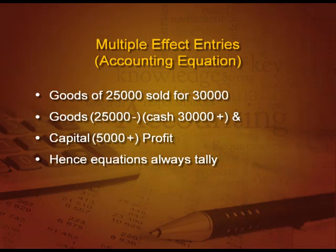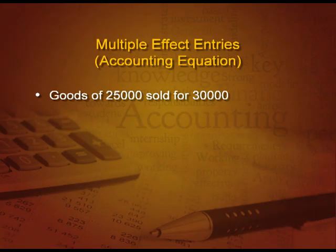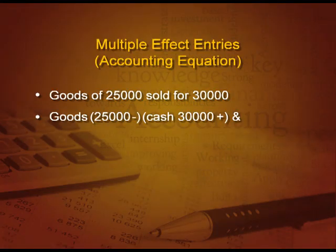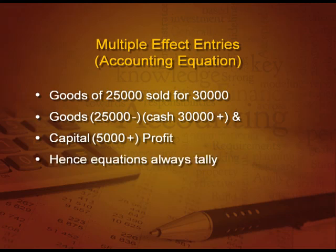There are multiple-effect entries in the accounting equation. For example, goods of 25,000 sold for 30,000: this entry affects three points — goods (25,000) will be subtracted, cash (30,000) will increase, and a profit of 5,000 will increase our capital. On the asset side, minus 25,000 plus 30,000 gives a net effect of plus 5,000, and capital also increases by 5,000 — so the equation is maintained.